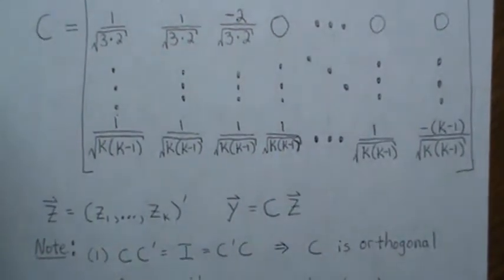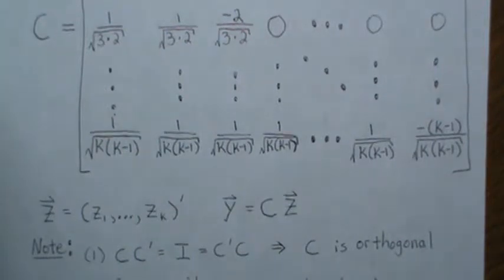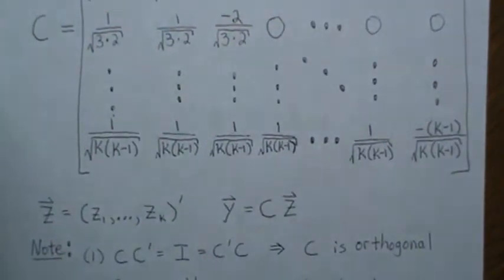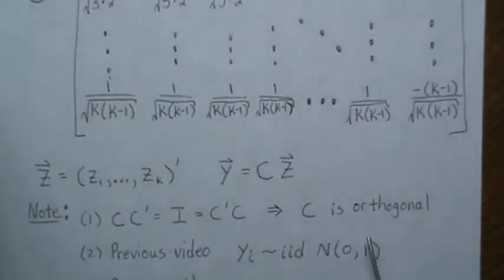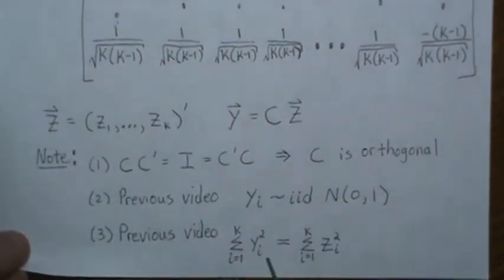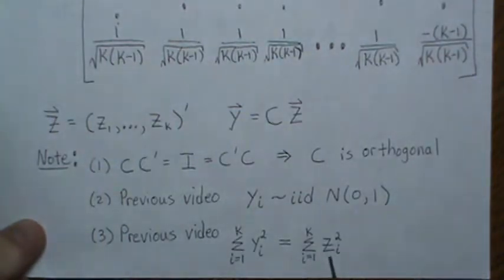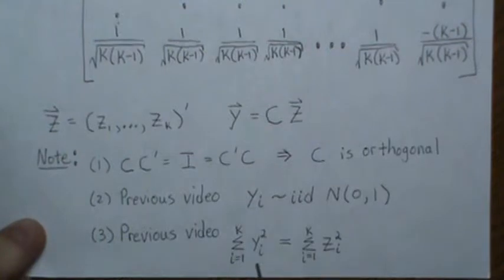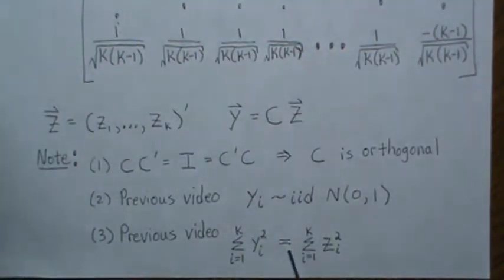This is an orthogonal transformation because C times C-transpose equals the identity matrix — you can verify this by doing the matrix multiplication yourself. From the previous video, since the z's are independent normal random variables, the y's are also independent normal random variables — in fact, they are iid standard normal. We also showed in a previous video that the sum of squared y elements equals the sum of squared z elements.